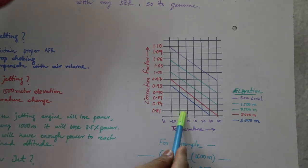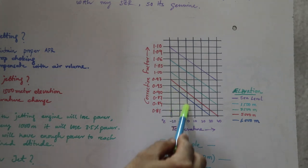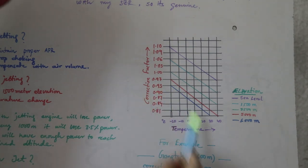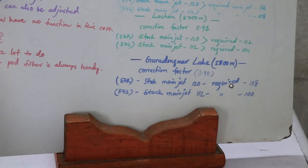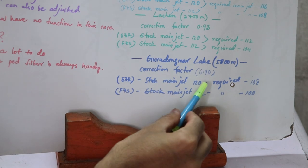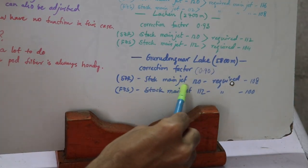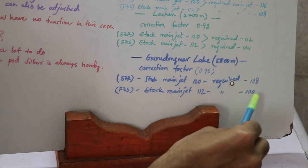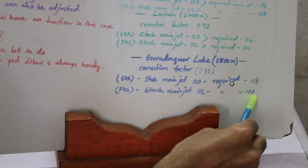or Zero Point, there are nearly about 5,500 to 6,000 meters and the temperature is around minus 0 to minus 10 degrees centigrade. In this region you're getting 0.9 as a correction factor. So multiplying with 0.9 as a correction factor you can get the stock main jet and the required measure: 108 for SZR and 100 for FZ.